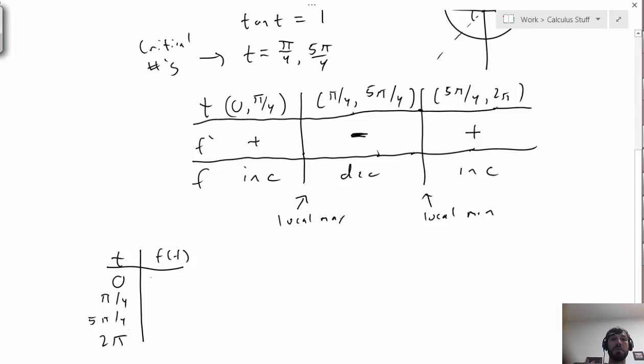At 0, sine of 0 is 0, so f is 0 here. At π over 4, we have e to the negative π over 4 times sine π over 4, which is 1 over root 2. At 5π over 4, we have the same thing, but the opposite. Well, not exactly the same because we have 5π over 4 in the numerator. And then back at 2π, we have 0 again. We can see that this one is going to be the absolute max, the only one of the 4 that was positive. And this one will be the absolute min since it's the only one of the 4 that's negative.